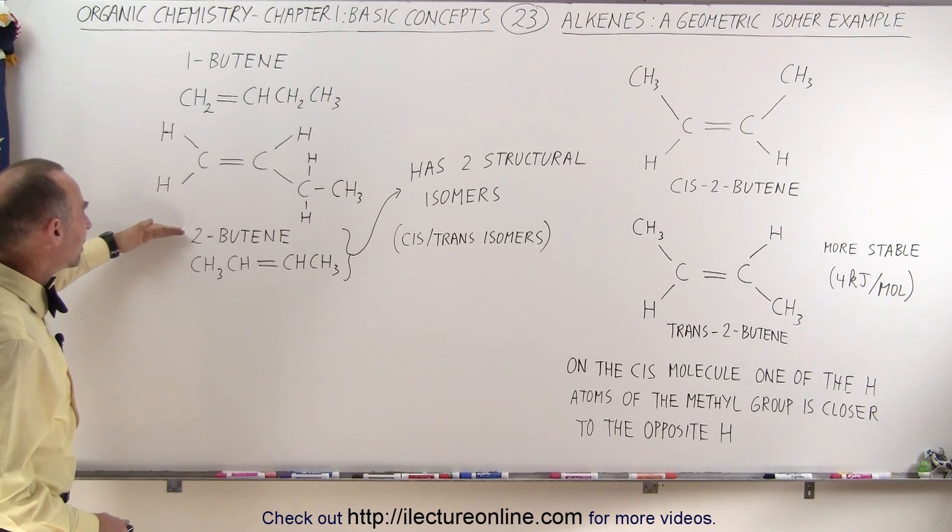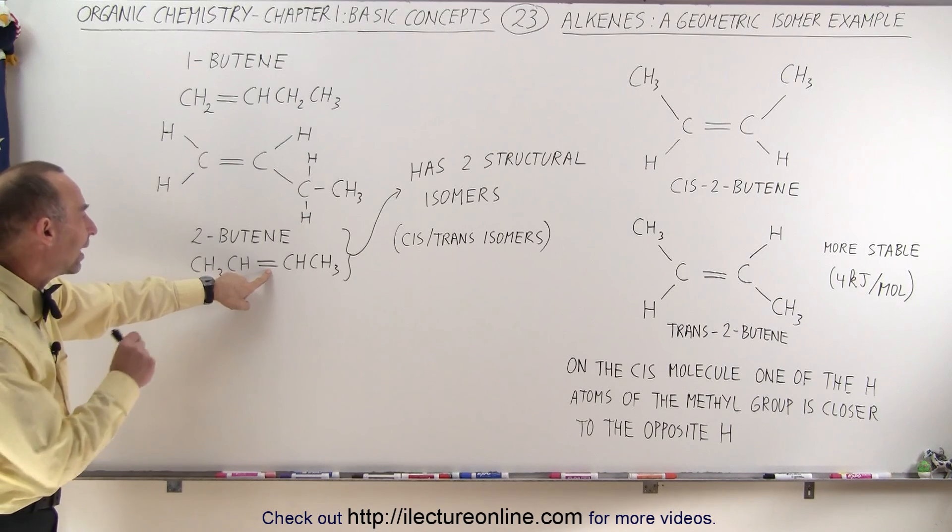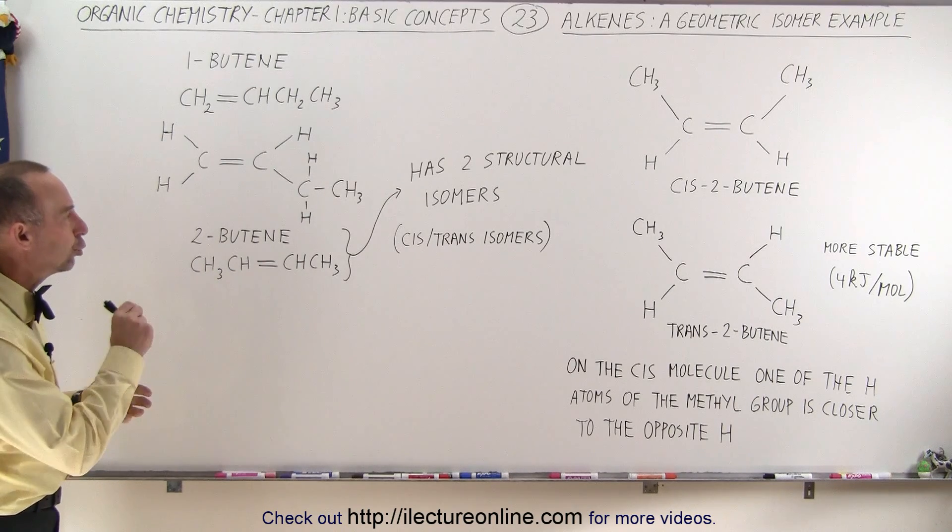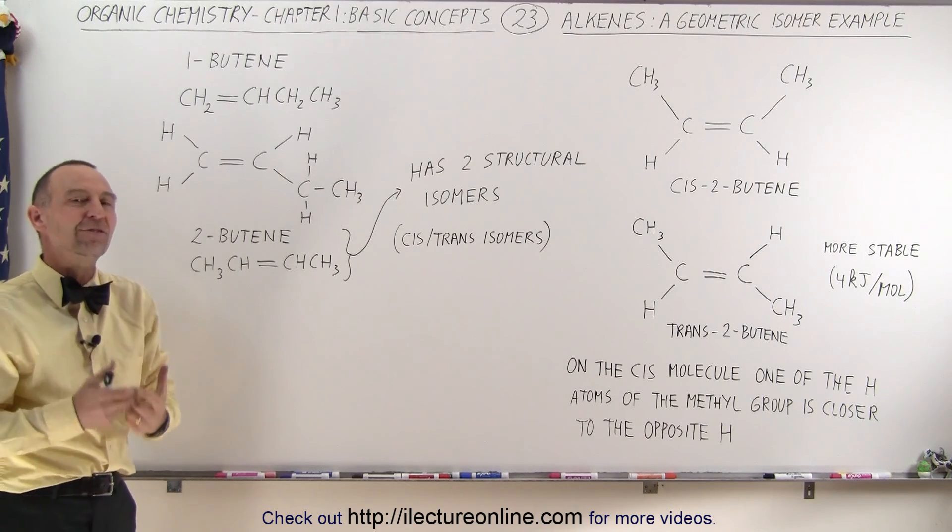And then we have two-butene where we have the double bond as the second bond in the chain. Now that particular molecule has what we call two structural isomers, two different shapes of the very same molecule.